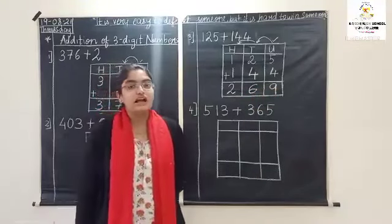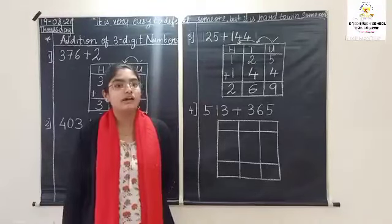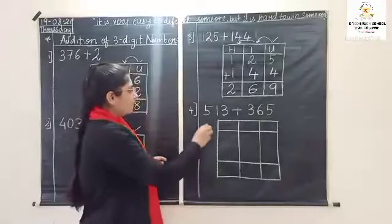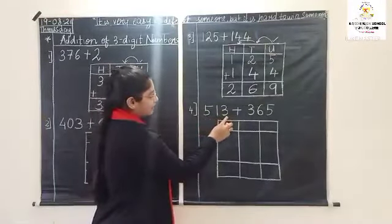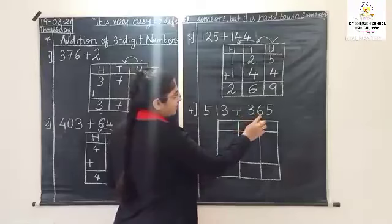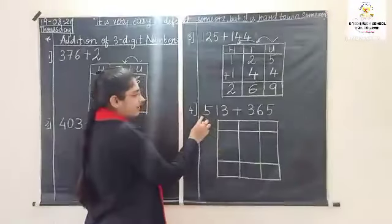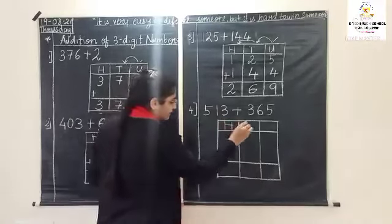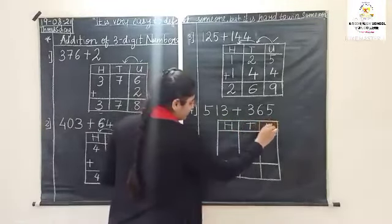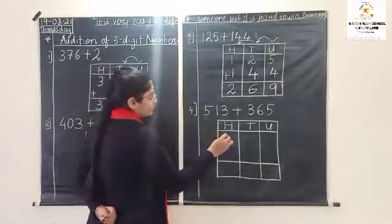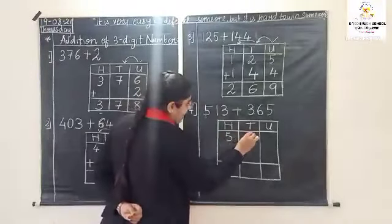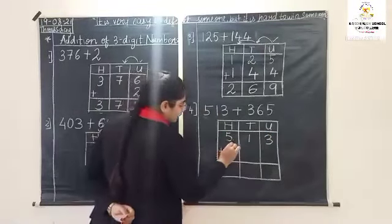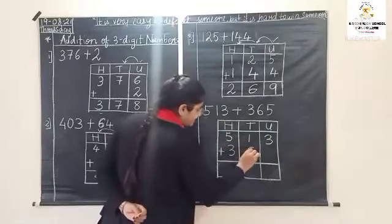Students, I hope you all are understanding how to do addition. Now we will see the next question: five hundred and thirteen plus three hundred and sixty-five. Again, both are three-digit numbers arranged in this table — hundreds, tens and units.